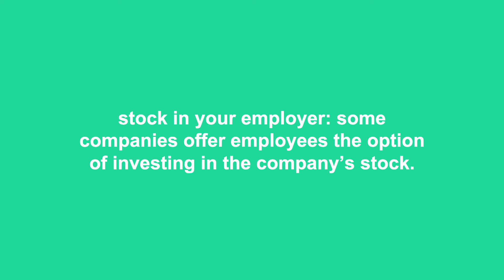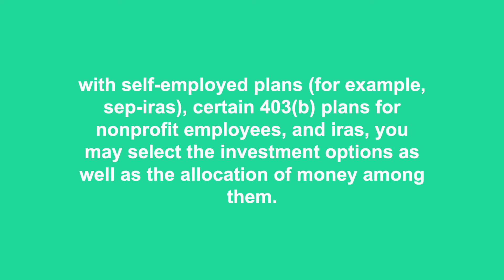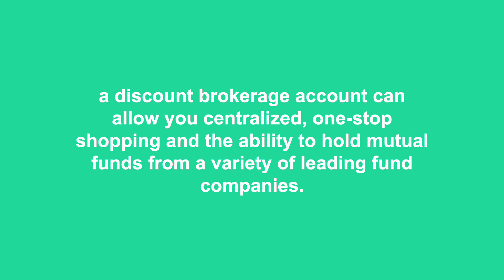With self-employed plans — for example, SEP IRAs, certain 403b plans for non-profit employees, and IRAs — you may select the investment options as well as the allocation of money among them. To establish your retirement account, call the company's toll-free number and ask the representative to send you an account application for the type of account you want to set up. Most investment firms provide downloadable account applications and may allow you to complete the application online. A discount brokerage account can allow centralized, one-stop shopping and the ability to hold mutual funds from a variety of leading fund companies. Some funds are available without transaction fees, although you pay a small transaction fee to buy most of the better funds — the discounter is a middleman between you and the fund companies.